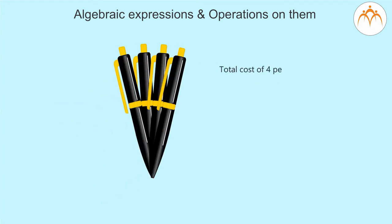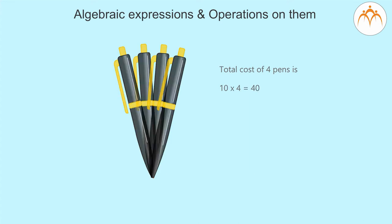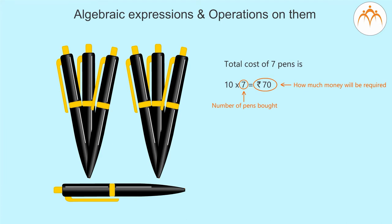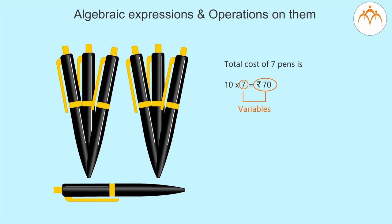If we buy 4 pens, then total cost = 10 into 4 = 40 rupees. Similarly, for 7 pens, the total cost is 10 into 7 = 70 rupees. You must now have understood that in this example we can substitute different numbers of pens in the formula to find out how much money will be required. This means that in this formula, the number of pens bought and the total cost are not fixed numbers.